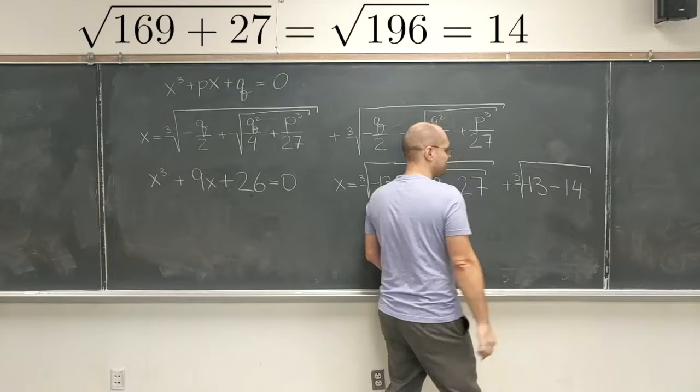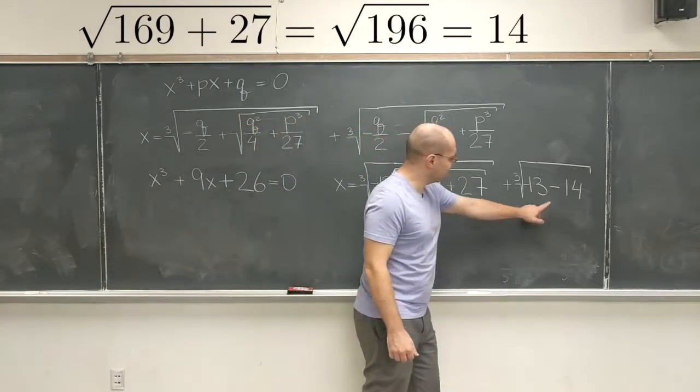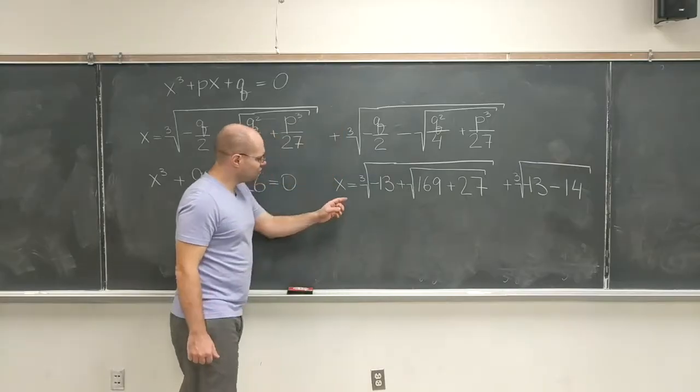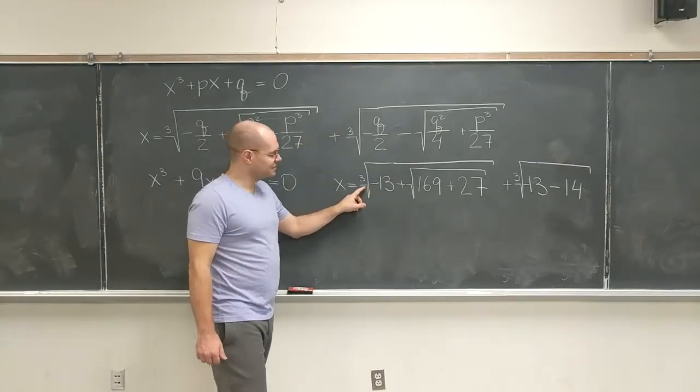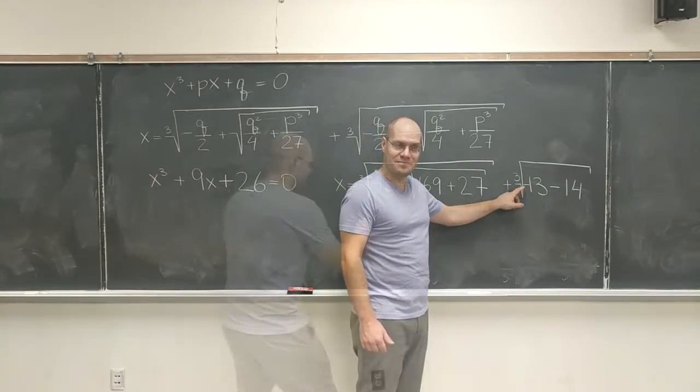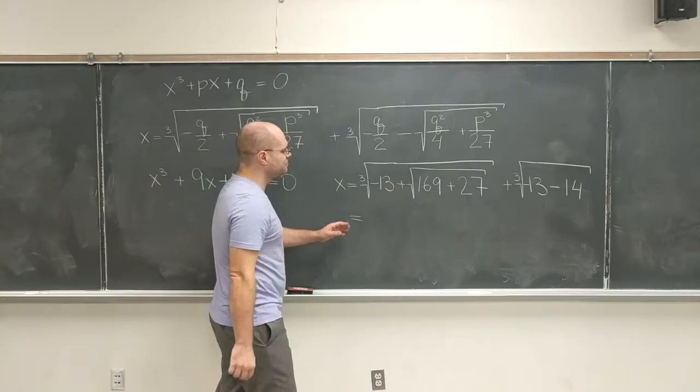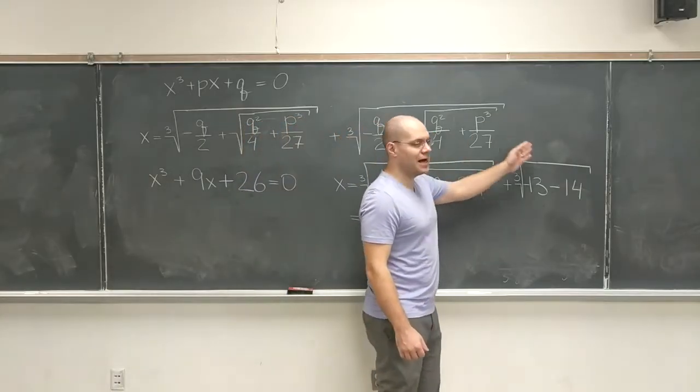Cubic root. Okay. So here it was plus 14, and here it is minus 14. So here we have cubic root of 1, and this is cubic root of 27. So we have 1 minus 3.